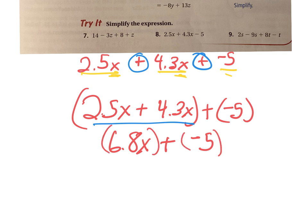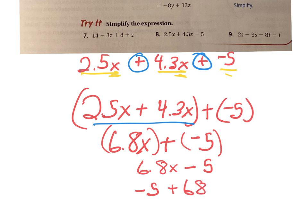I could rewrite this as 6.8x minus 5. Instead of adding, I'm going to subtract the opposite — the opposite of negative 5 is 5. Or, because it's addition, I could say negative 5 plus 6.8x. Either one works.